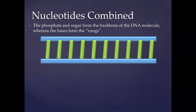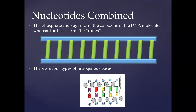The sugar and phosphates join to each other, making up what we call the backbone. Then we have pairs of nitrogenous bases that join together, forming the rungs of the ladder. This entire structure is then twisted, and that's what forms the double helix structure of DNA.